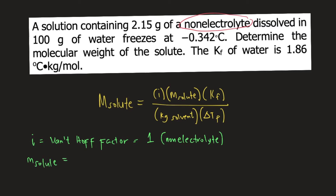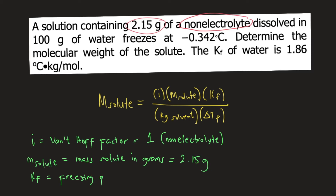M solute is the mass of solute in grams. According to the problem, the mass of solute is 2.15 grams. KF is the freezing point depression constant, and this is given in the problem: the freezing point depression constant of water is 1.86 degree Celsius kilogram per mole.